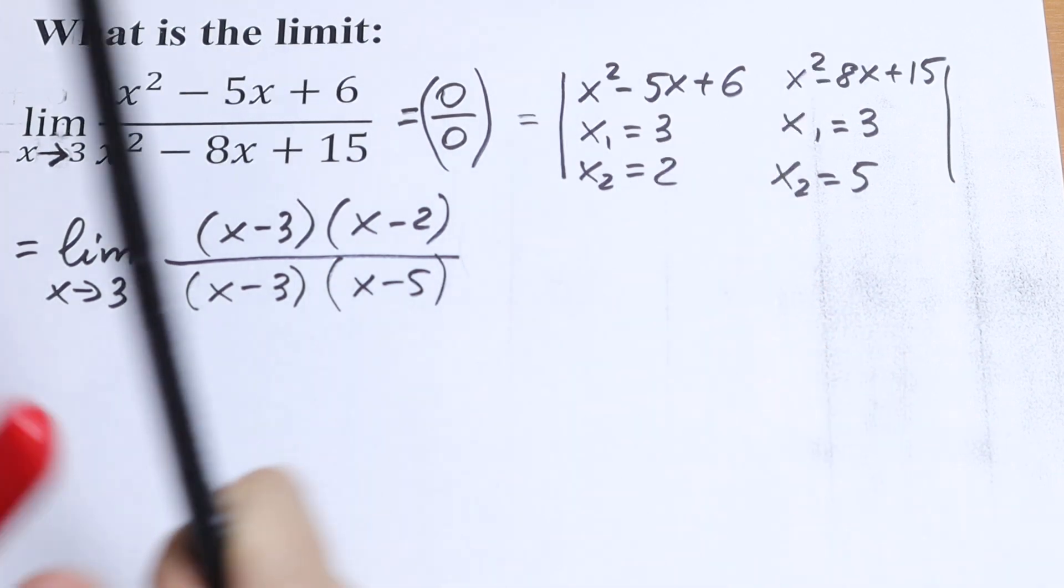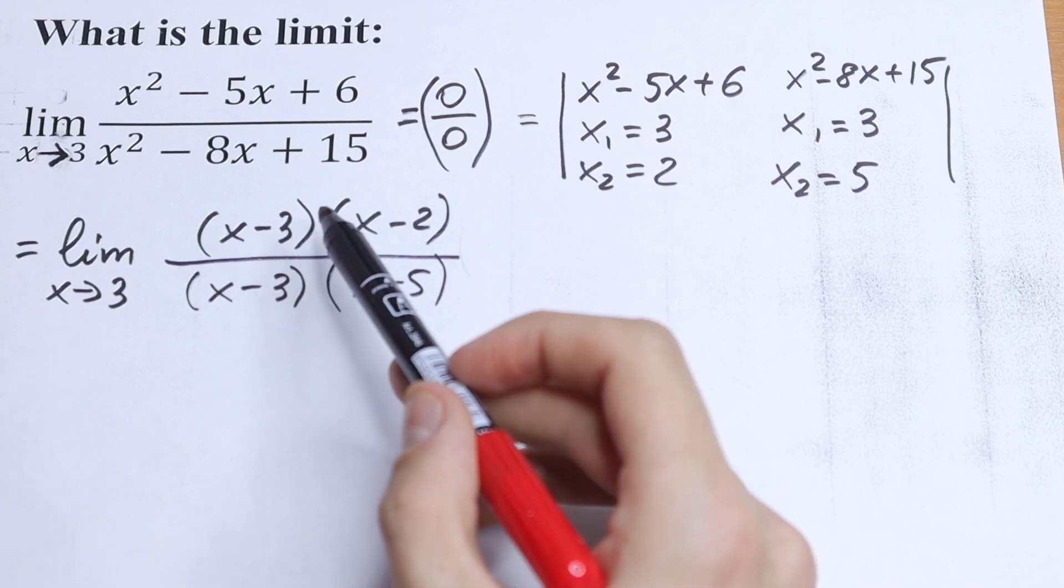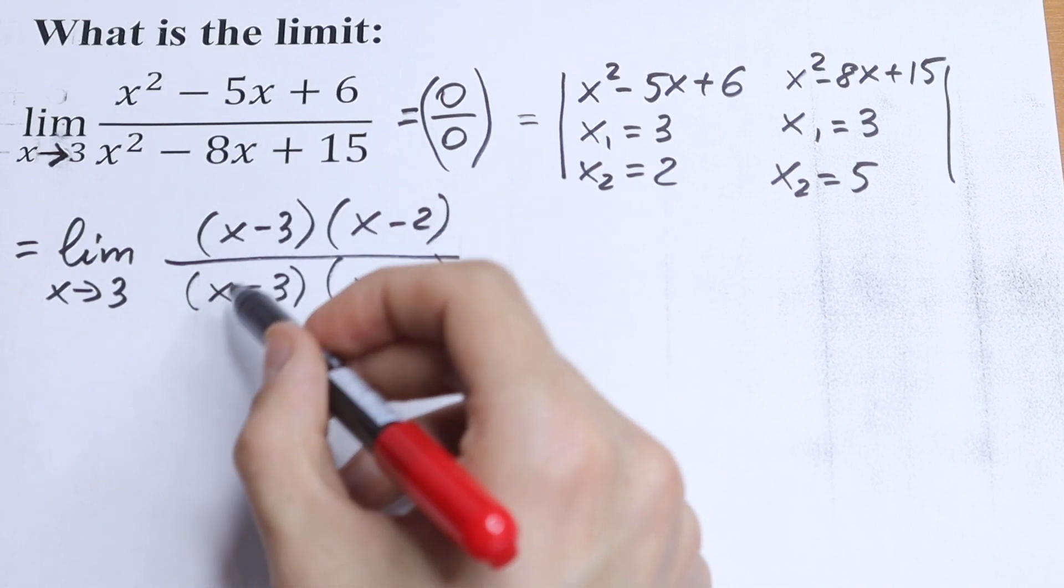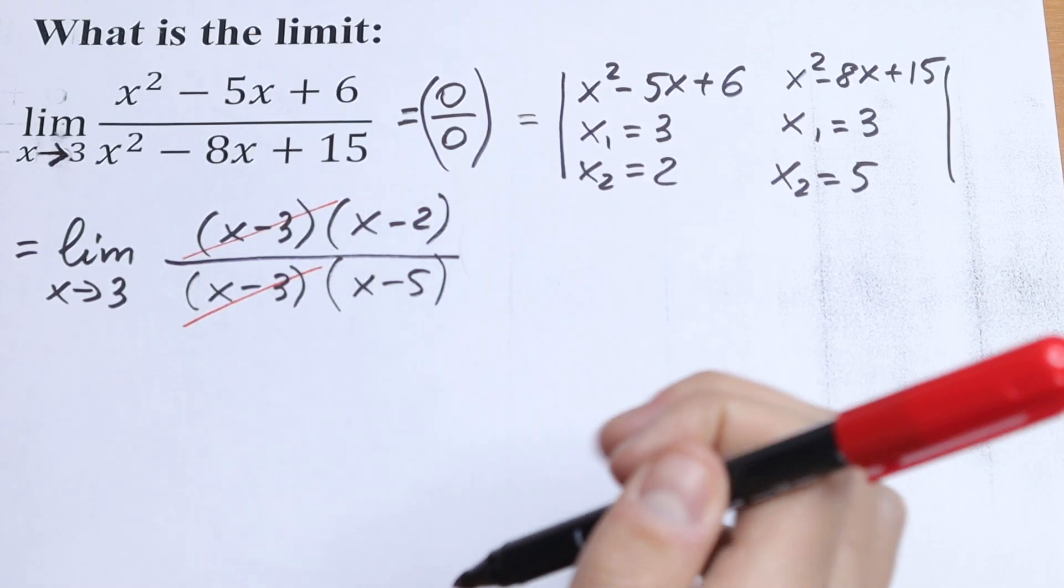Take a look. We have these expressions that give us undefined answer. We will have x minus 3 and x minus 3 in our denominator, so we can cancel it.